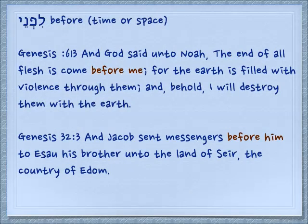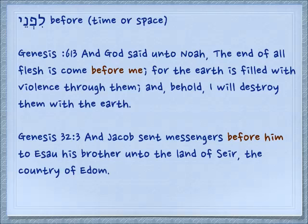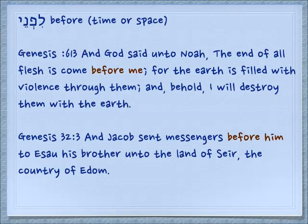These preposition-attached words also carry the suffixes for the person — for the object of the preposition. So in Genesis 6.13, God said to Noah, 'The end of all flesh is come before me.' It's not written there lifne — it's written lefnai — the ending indicates 'before me.' 'For the earth is filled with violence through them, and behold, I will destroy them with the earth.' Again, Genesis 32.3: 'And Jacob sent messengers before him,' lefnav with the ending for the personal pronoun 'him,' 'to Esau his brother, unto the land of Seir, the country of Edom.' Most of the cases will have a personal pronoun attached — it's a little difficult to find just lefne sitting by itself.